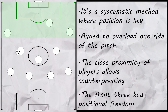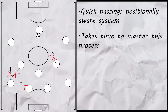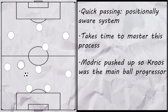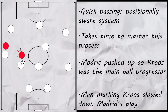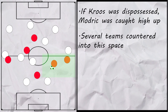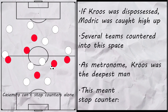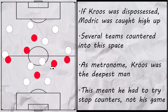Up front, he gave the front three creative freedom. But the problem is this system needs quick passing to be successful, and that's brought about by players knowing exactly where to be — which was not the case as Madrid were still adjusting. Lopetegui played Modric high, meaning Kroos did all the ball progression, so when he was man-marked they struggled to move up the pitch. As a result, they were often dispossessed with one side of the pitch overloaded, and using Modric extremely high left a gaping hole to counter into, which happened often. Kroos was the metronome, so from there he would have the responsibility to try to stop the counter. Even high up the pitch, chance creation was left to Modric, with Kroos told to stay deep — which isn't his game, as he said himself.